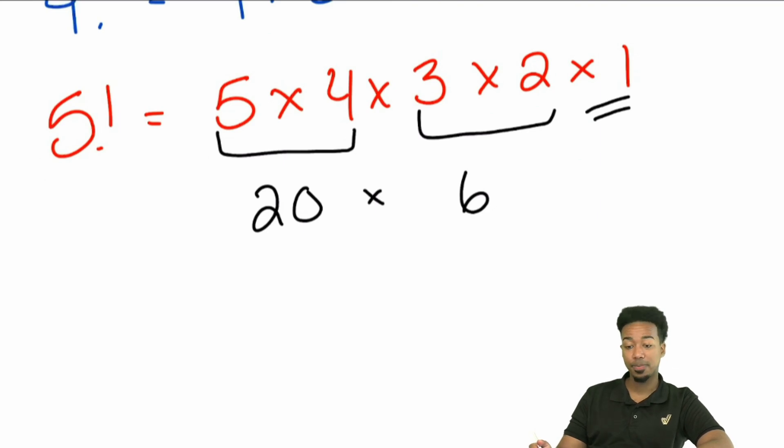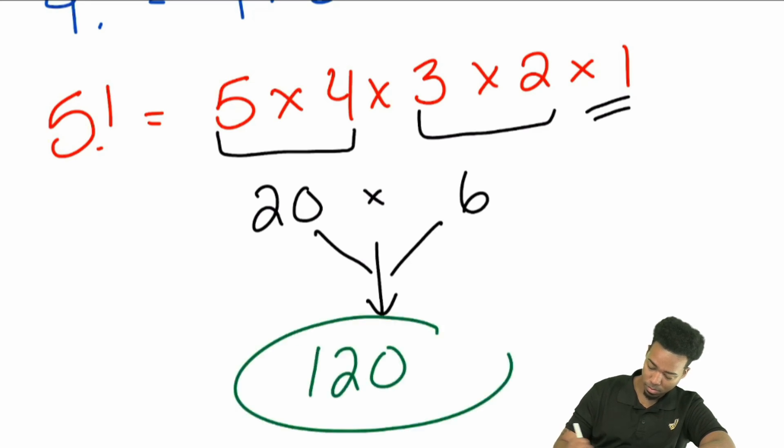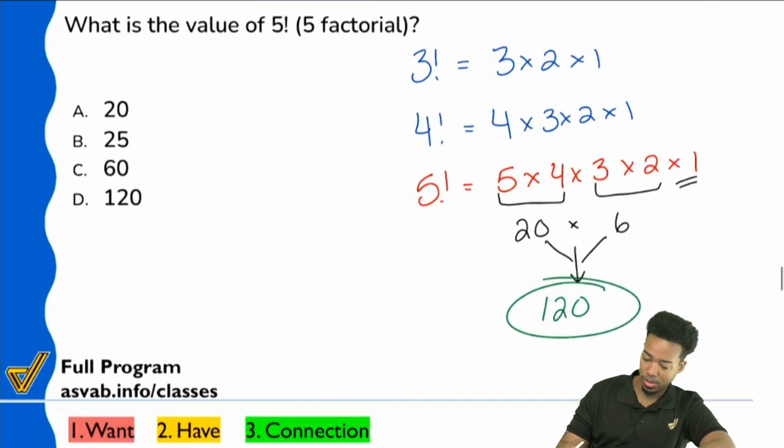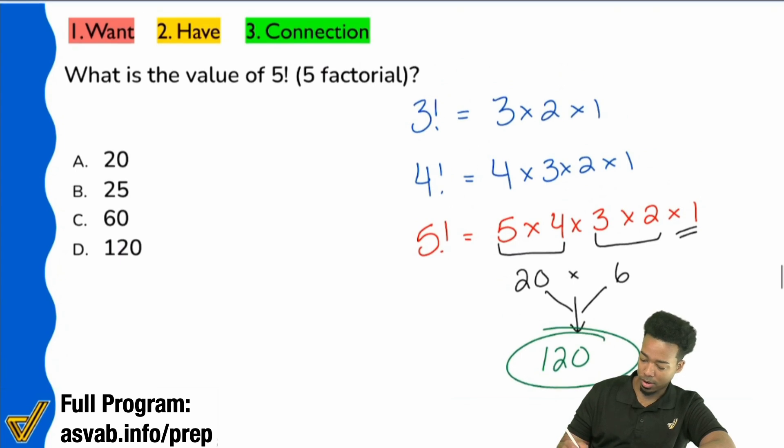And now we'll do 20 times six. What's 20 times six? 120. There it is. And we are done. Boom.